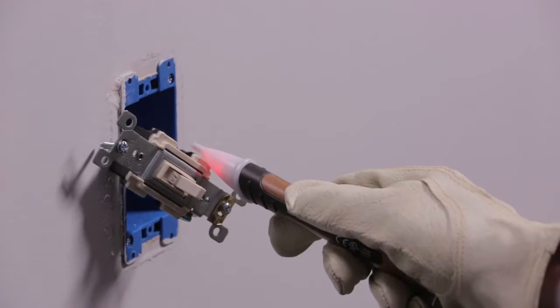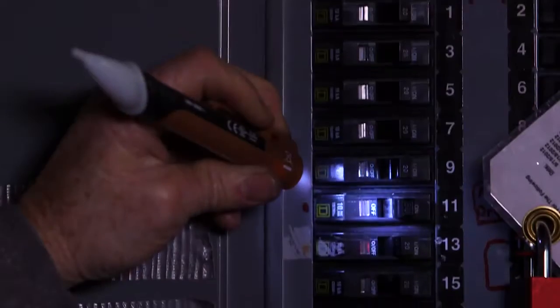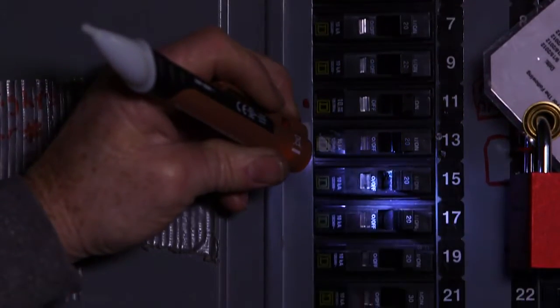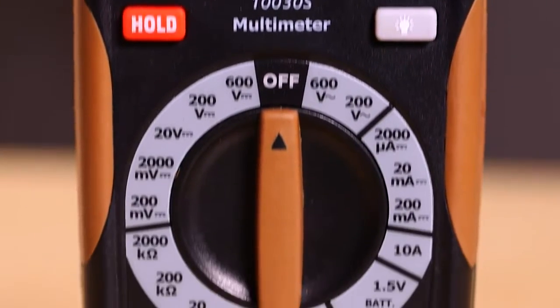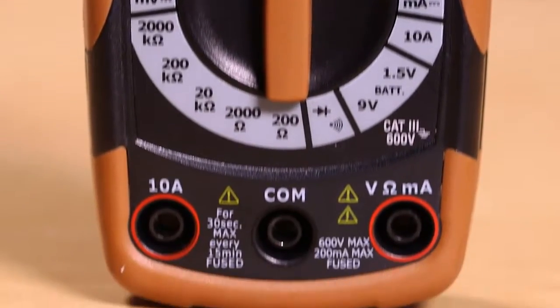The 40110N also features a built-in flashlight for added convenience. The 10030S Manual Ranging Multimeter can be used for a wide range of electrical testing.